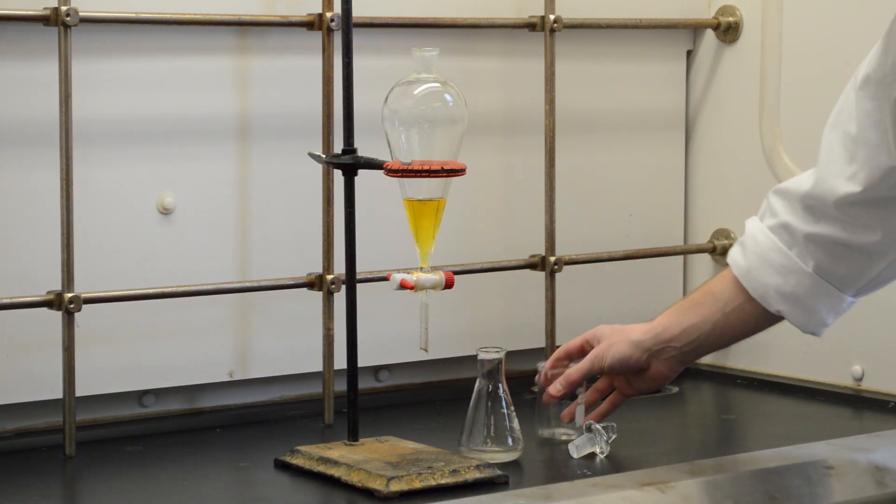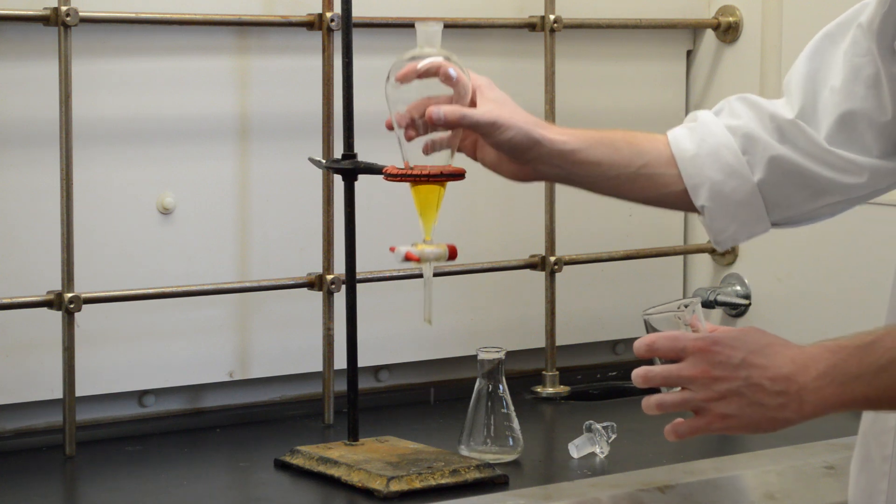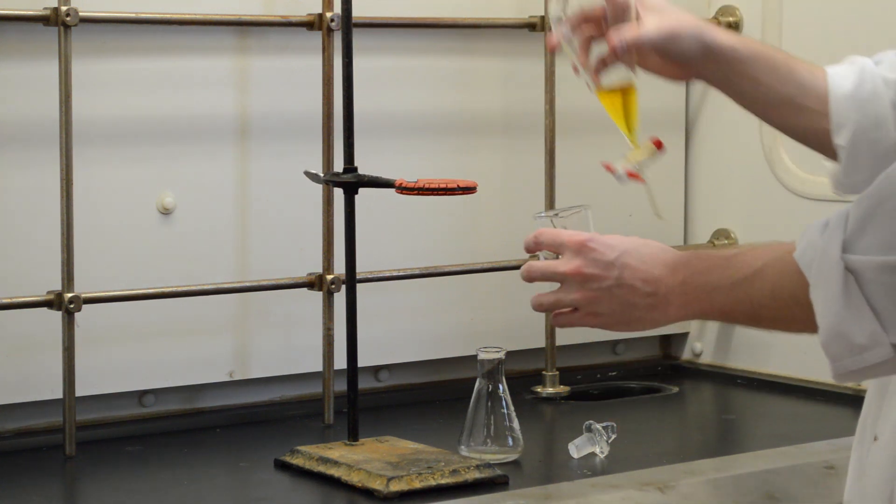We let the bottom layer run through the bottom, but when we're collecting the top layer, we want to be sure to pour it through the top of the separatory funnel instead.